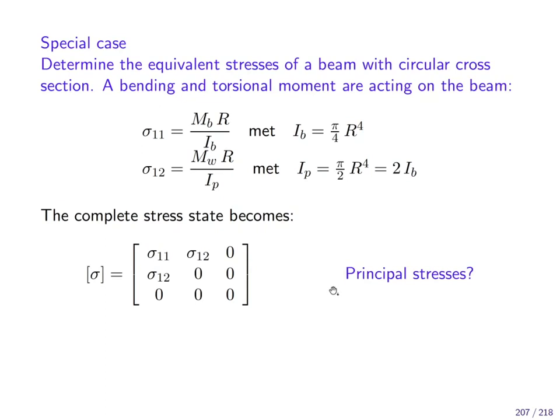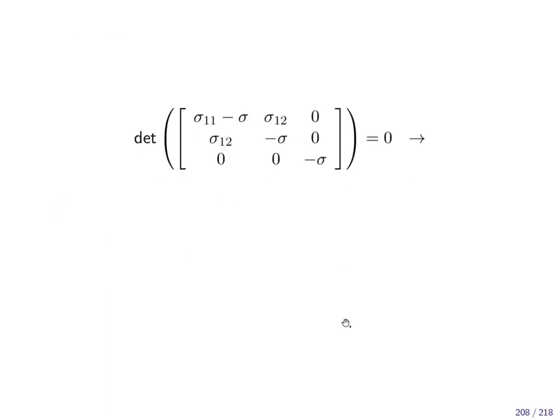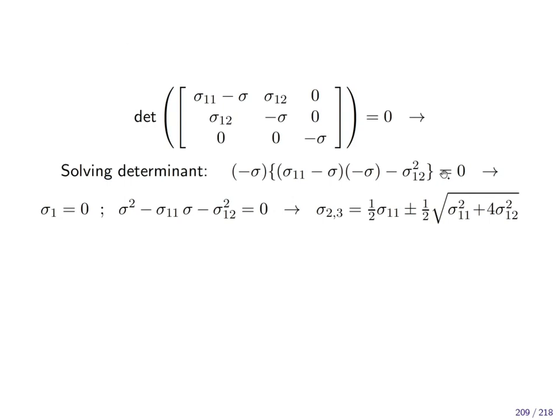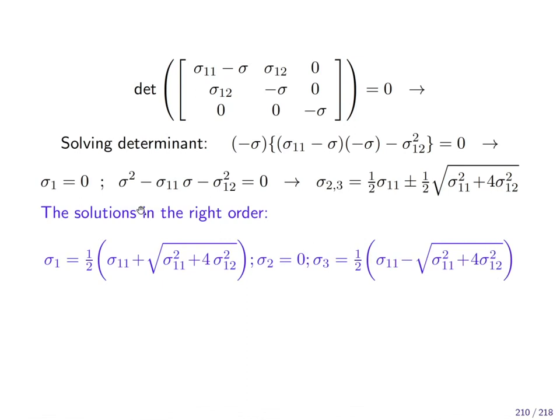Now, we can answer the question, what is the principal stress of this stress matrix. We follow the linear algebra procedure, we write down the characteristic equation. One principal stress answer is trivial, it's zero and the other one is the solution to the quadratic equation that one you can write down out of memory and the solutions in the right order are sigma one times the first one, sigma two zero and sigma three, the second one with a negative term here. So that one must always be smaller than zero. When you look inside here, the term under the bracket is larger than the first term, so the minus makes it negative. So this is the solution procedure. In this case, it's not so complicated. You can do this quickly with a little bit of practice.